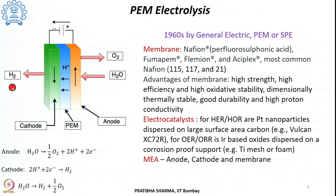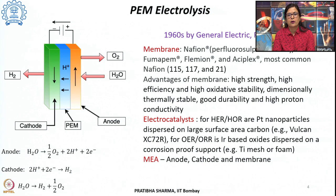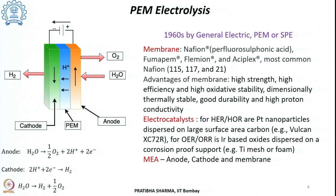On the cathode side, hydrogen gas is evolved, and the overall reaction is water splitting into hydrogen and oxygen. In a typical PEM electrolyzer, the most commonly used membrane is Nafion, which is a per-fluoro-sulfonic acid membrane. Other options include Fumapem, Flemion, and Aciplex, but Nafion is the most commonly used.